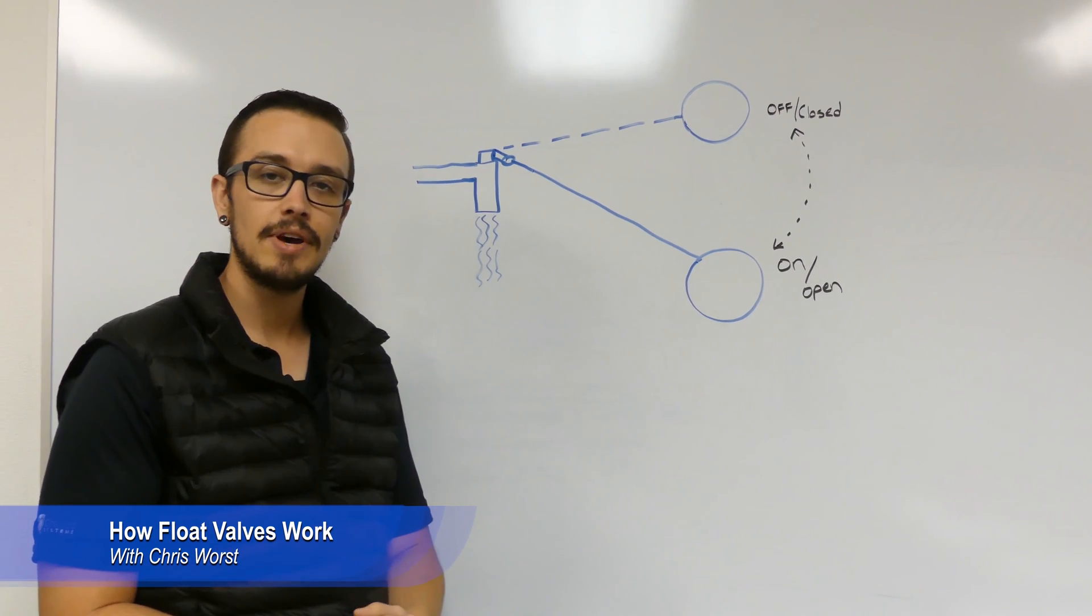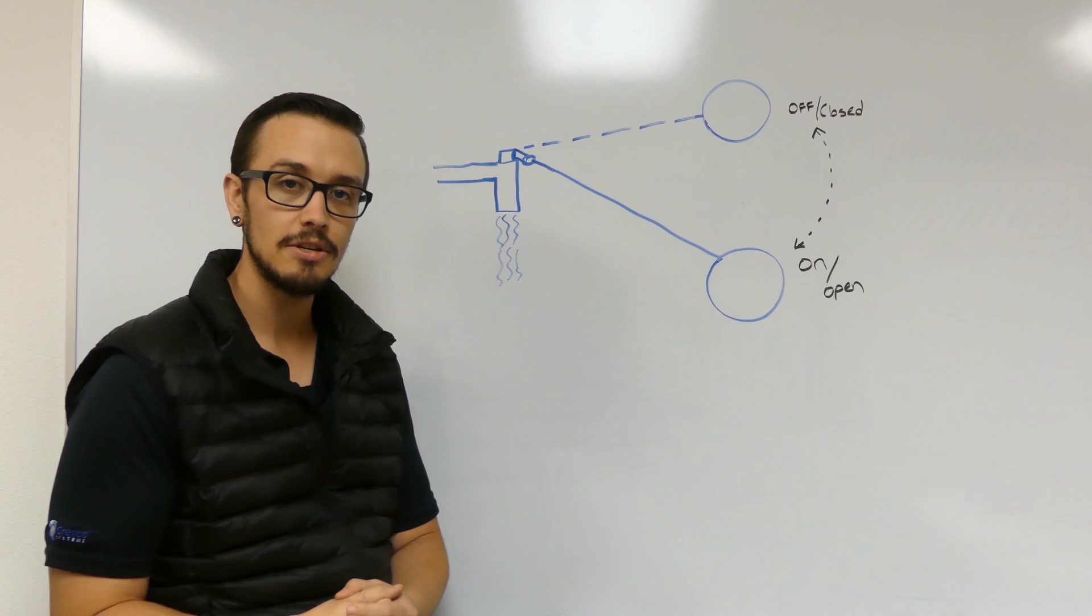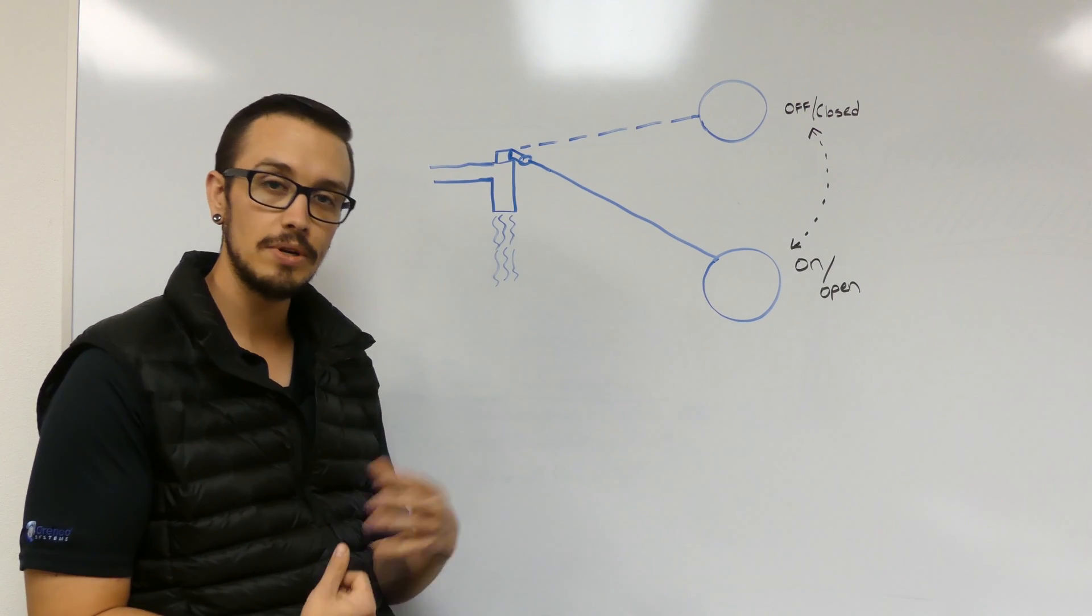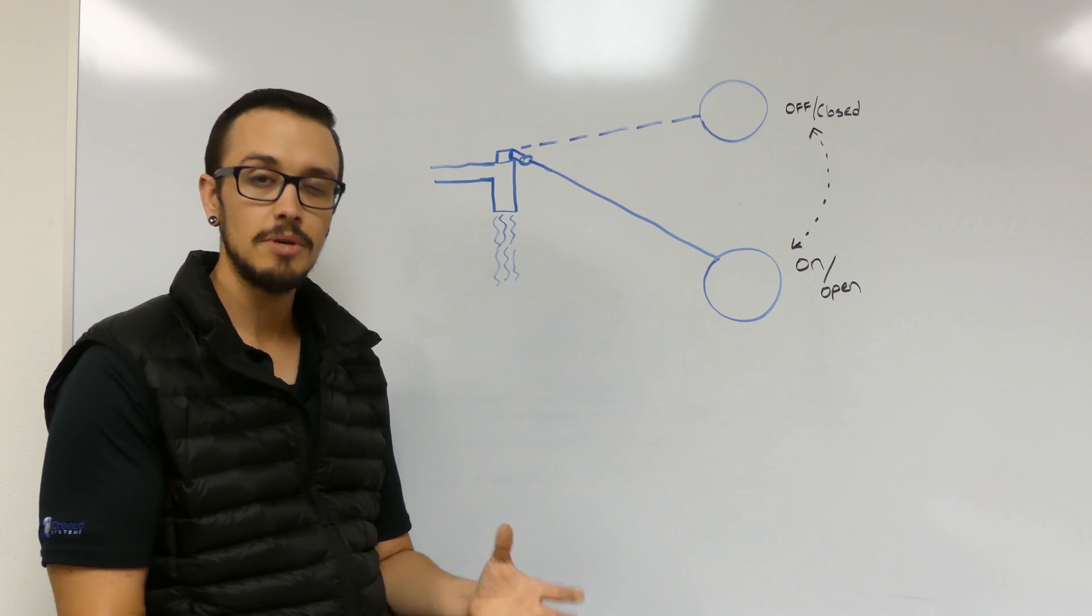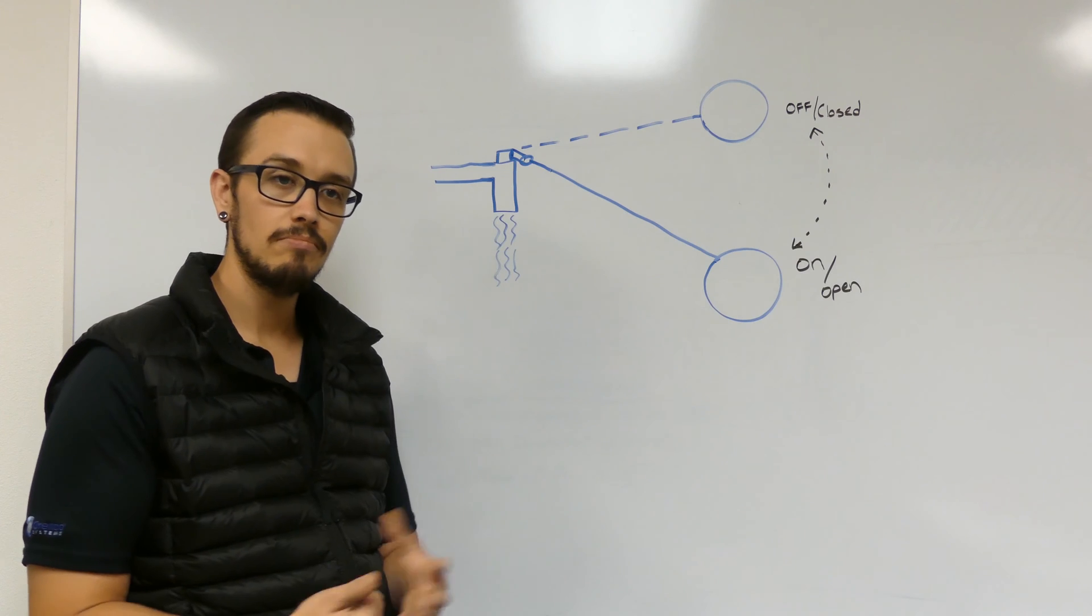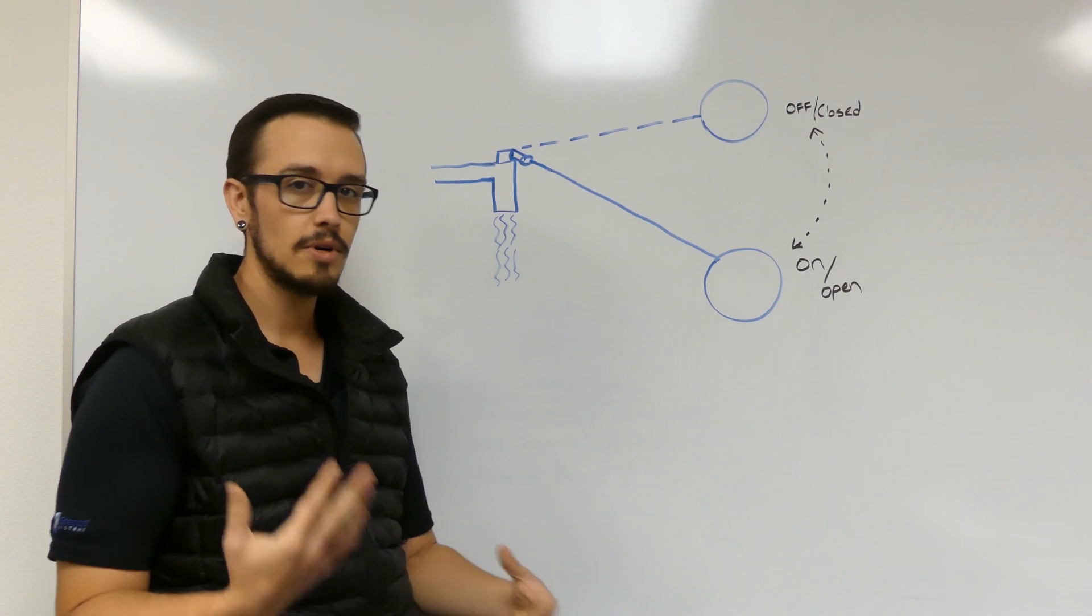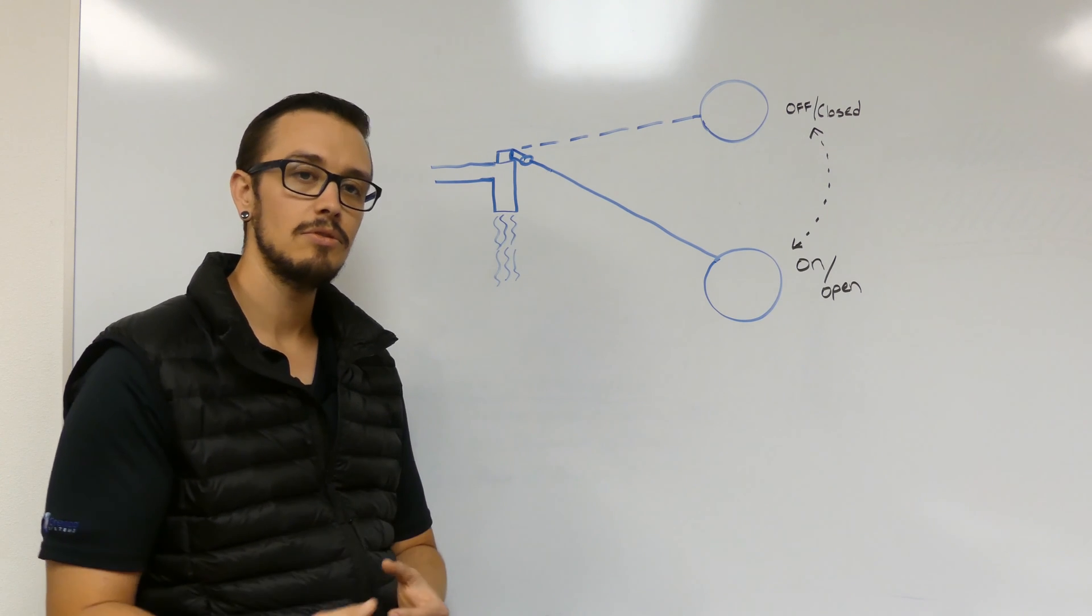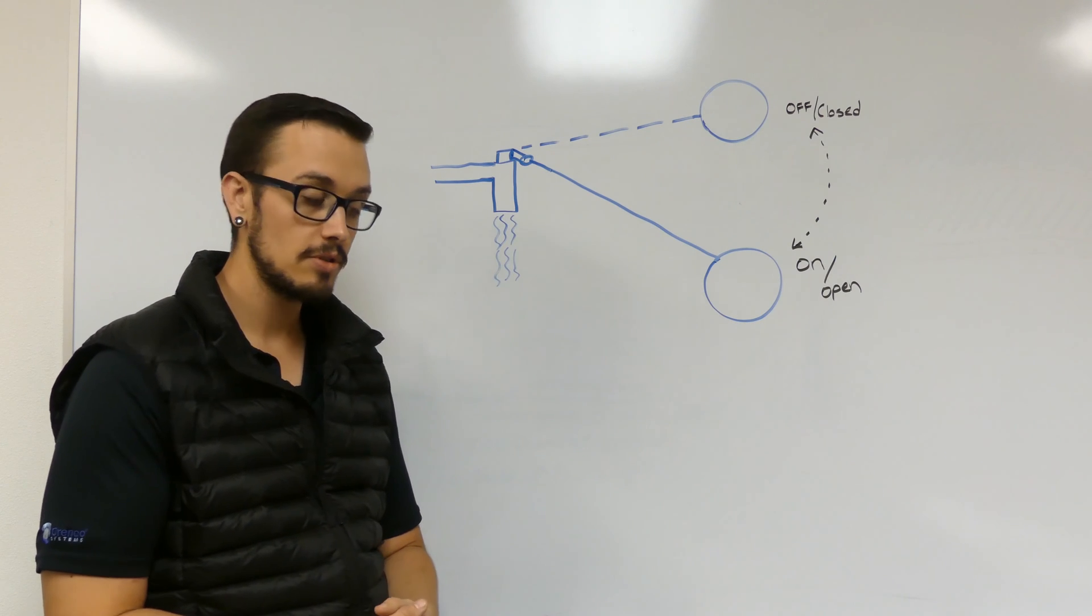Basically, these valves are very useful in reservoir or cistern applications where you don't necessarily want to run electrical all the way to the cistern and operate it off of a typical control float. A lot of people, even a couple people this week that I've spoken to, were oblivious to the fact that these things exist and they're an excellent solution to minimize cost on a reservoir or cistern system.